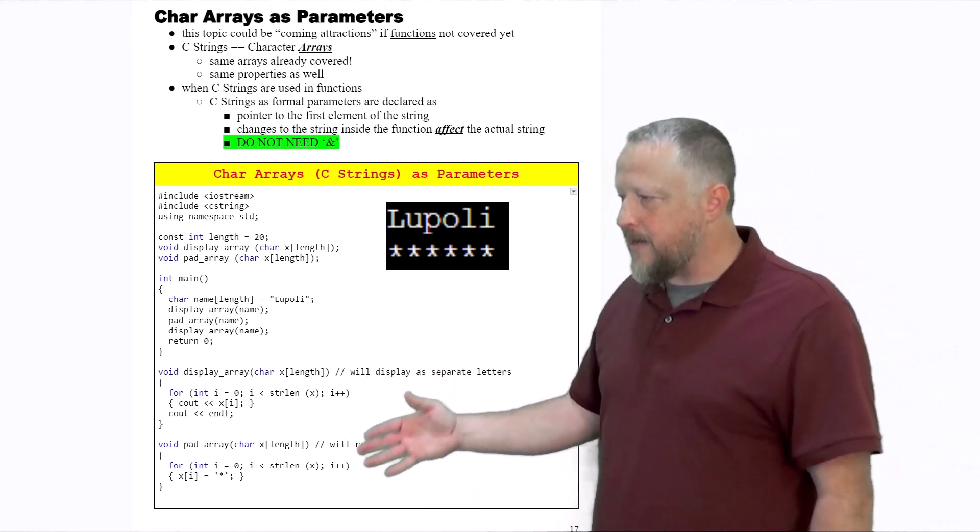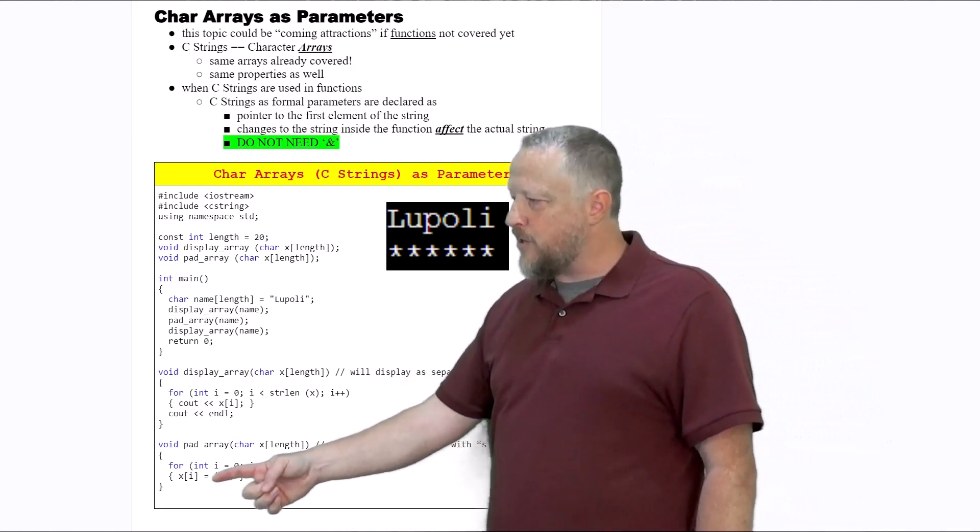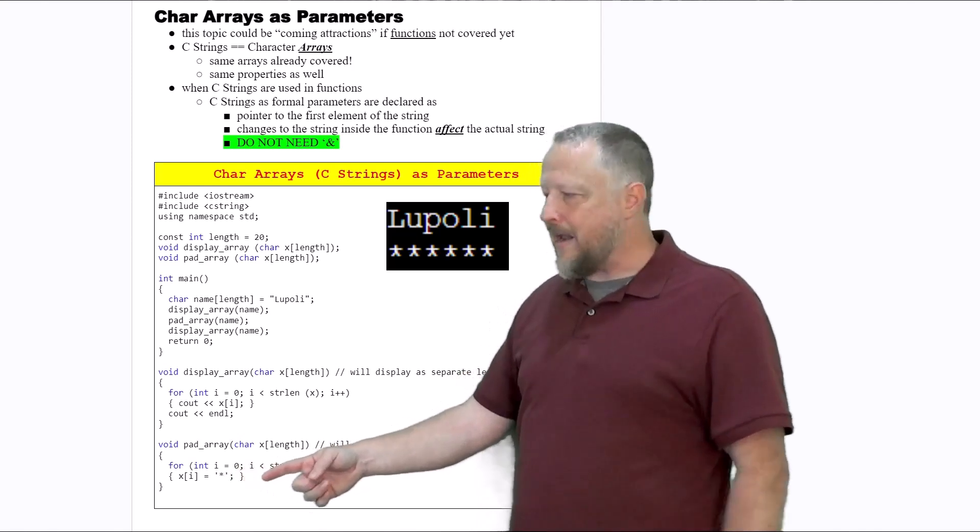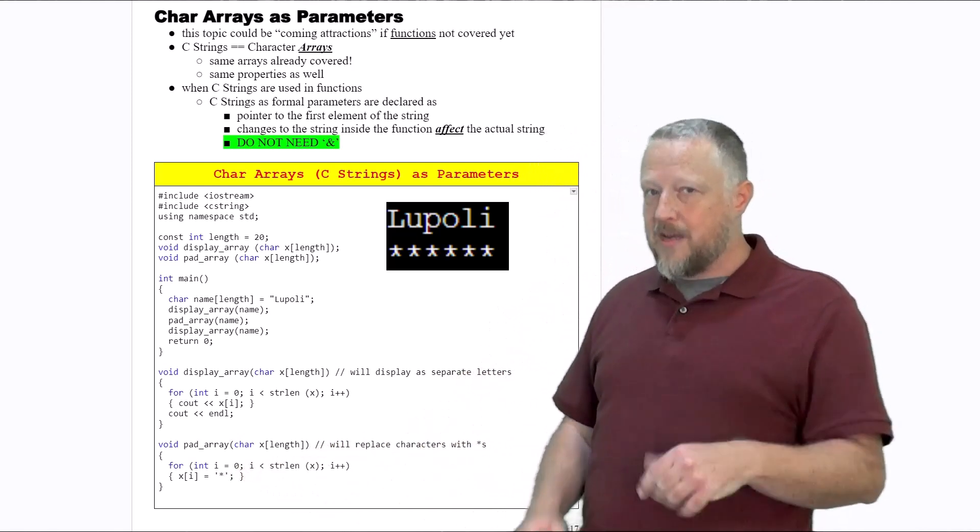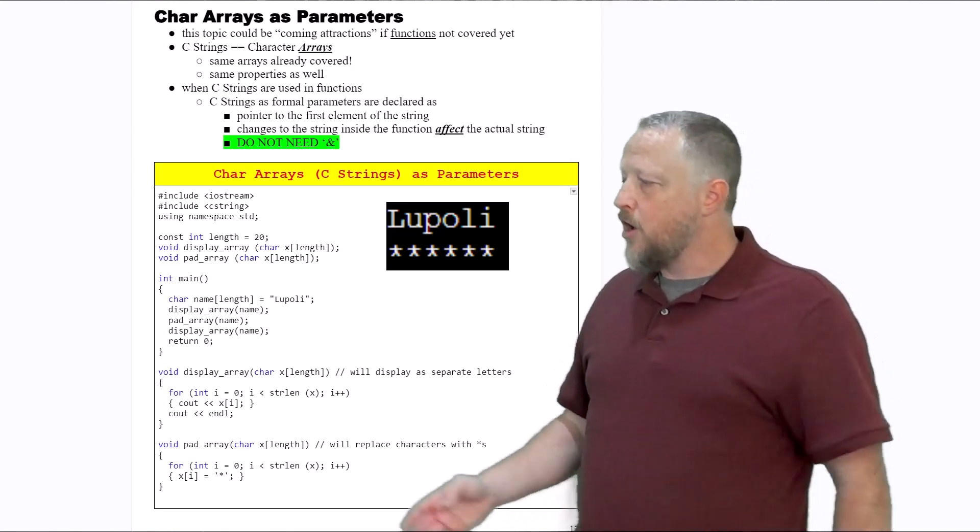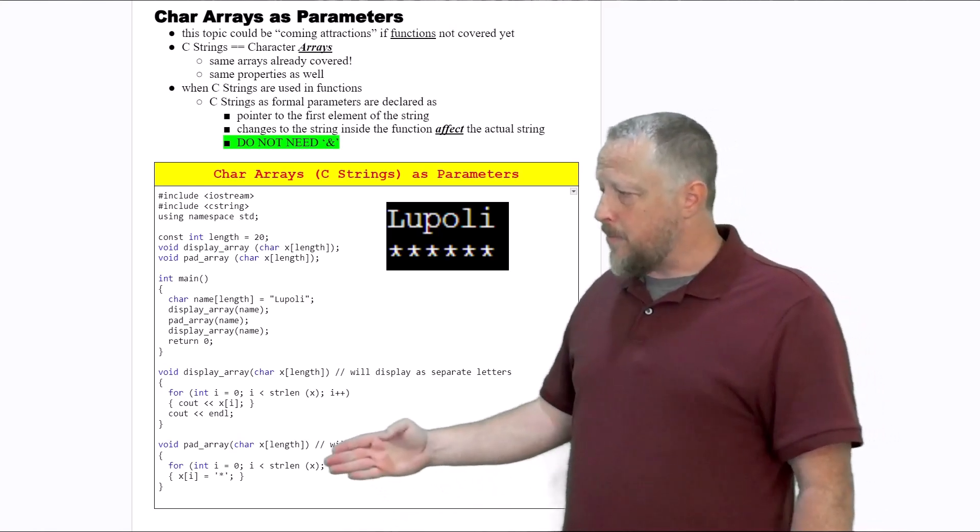What this is going to do - notice the for loops look pretty similar here. The only thing that's different is that for every single index at i, we are going to replace it. Now, I can use the equal sign because it's just a simple character with a star that you see here.